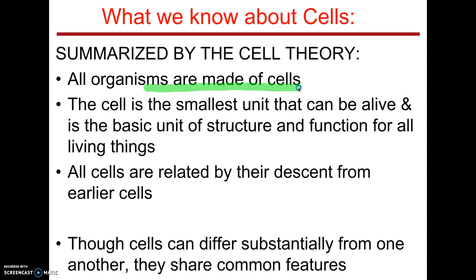So here they are. First, all organisms are made of cells. Second, the cell is the smallest unit of life, and it's the basic unit of structure and function of all things. That means we're not just made of cells — they are what make our structures, and they are actually what are carrying out all the functions that are keeping us alive.